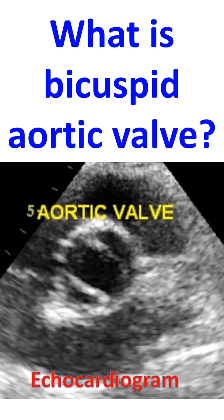Normally, the aortic valve has three semilunar leaflets. A bicuspid aortic valve is a birth defect in which the aortic valve has two leaflets instead of three. It is the commonest birth defect of the heart and can occur in about 1 in 100 individuals.